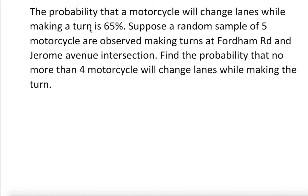The probability that a motorcycle will change lane while making a turn is 65 percent. Suppose a random sample of five motorcycles are observed making turns at the Fordham Road and Jerome Avenue intersection. Find the probability that no more than four motorcycles will change lane while making the turn.